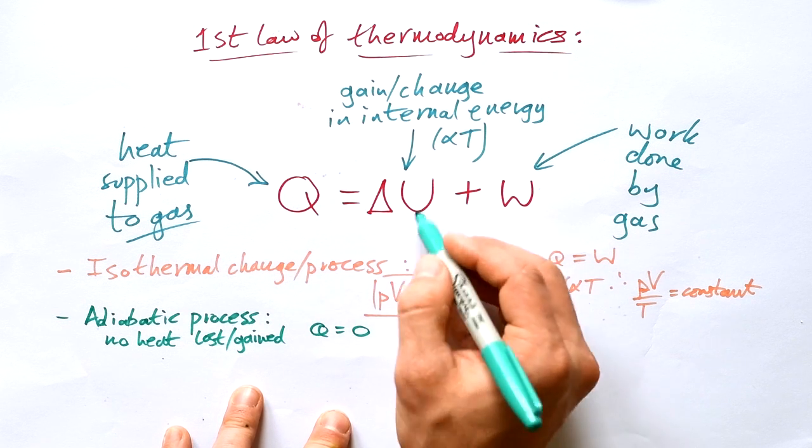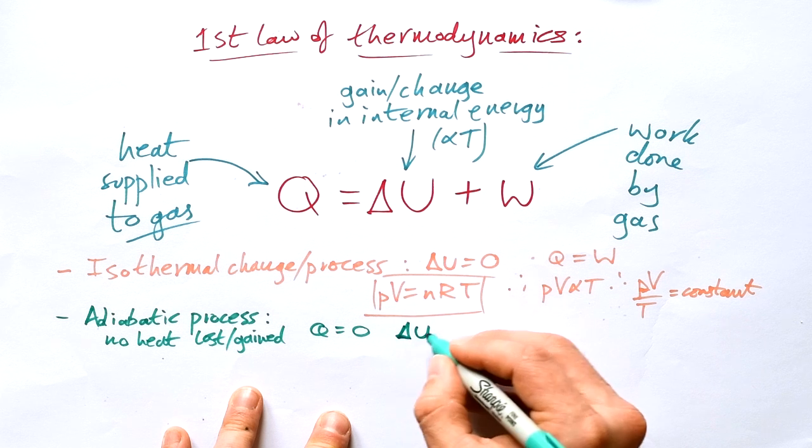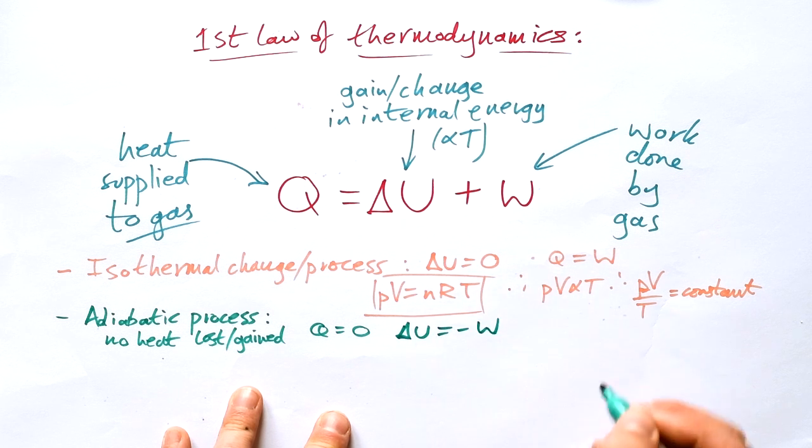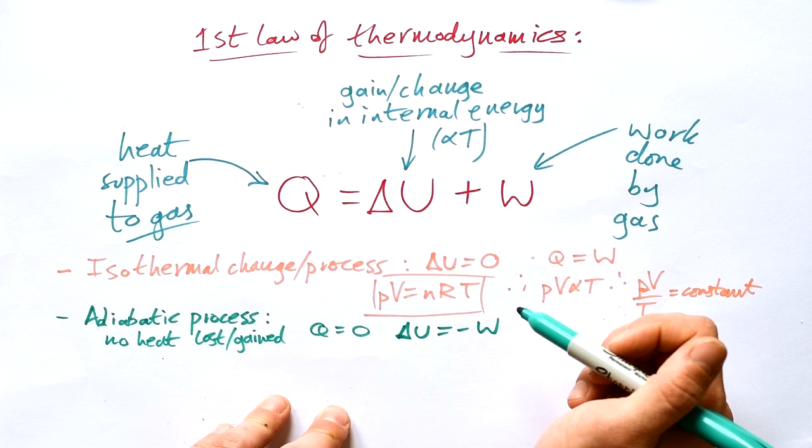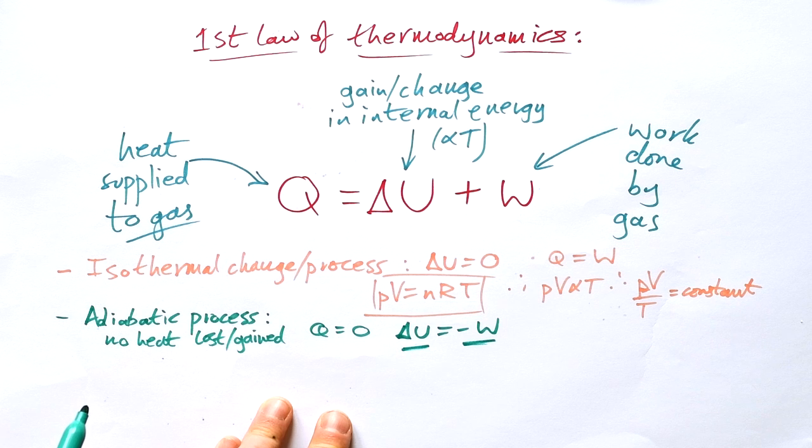So if we take Q out of the equation, put W over the other side or delta U over the other side, we know that the change in energy, internal energy, is going to be equal to minus W. And that makes sense because if a gas does work, then that means that it has to lose energy and it has to be losing the energy from the internal energy of its particles.